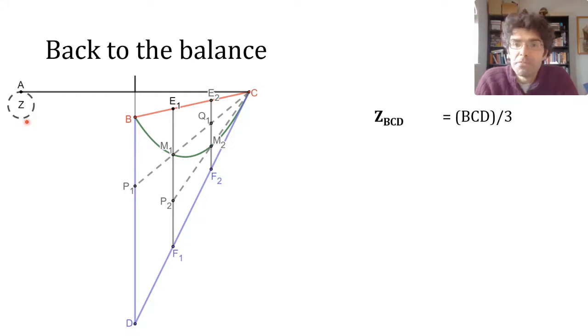What we can do is split BCD into vertical strips and consider the contribution of each strip to that weight that we would have to hang on the left hand side.